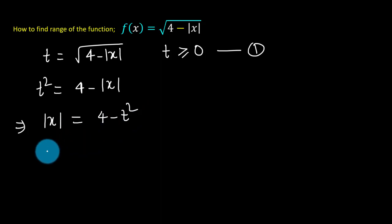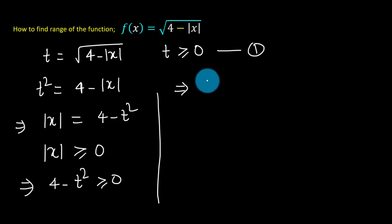We also know the fact that absolute value of anything is greater than or equal to zero. This implies the expression on the right hand side is also greater than or equal to zero. This implies t squared minus 4 is less than or equal to zero.